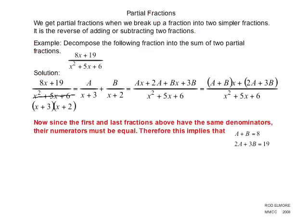Now since the first and the last fractions above have the same denominators, so look at that. The one way in the beginning, the one we started with, has the same denominator as our final one. The numerators must therefore also be equal. Therefore, this implies that a plus b must equal 8 because it's the numerical coefficient of the x, and the 2a plus 3b must equal 19 because they're both constant terms, they don't have x in them.